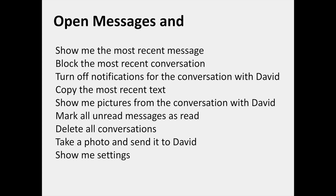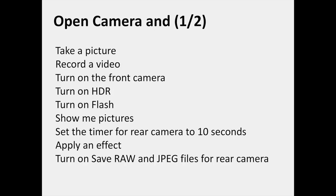In the Messages category, you can say: show me the most recent message, block the most recent conversation, turn off notifications for the conversation with David, copy the most recent text, show me pictures from the conversation with David, mark all unread messages as read, delete all conversations, take a photo and send it to David, or show me settings.